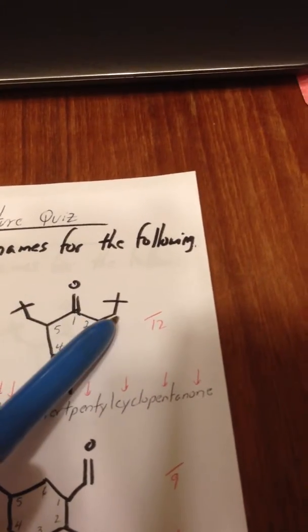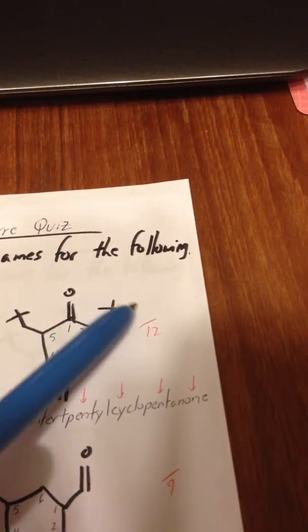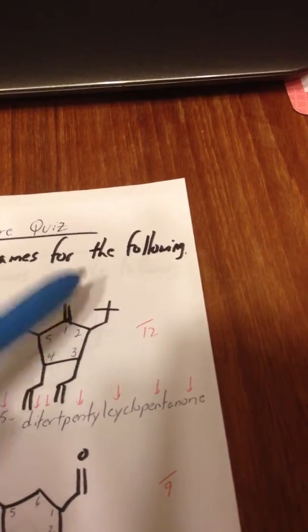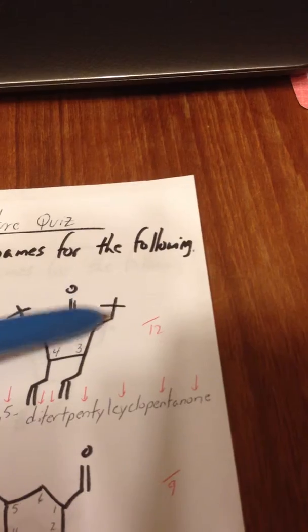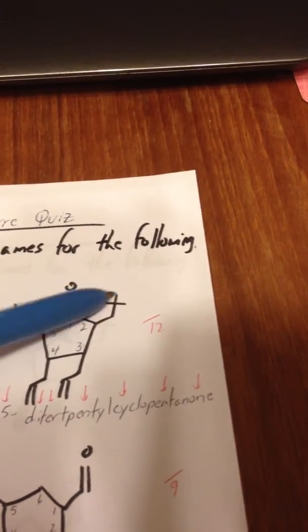And the first position is where the ketone group is. These are di-tert-pentyl, so tert-butyl has four carbons in it, looks like a cross. Tert-pentyl looks like a cross, but has an extra elbow, so it's five carbons.